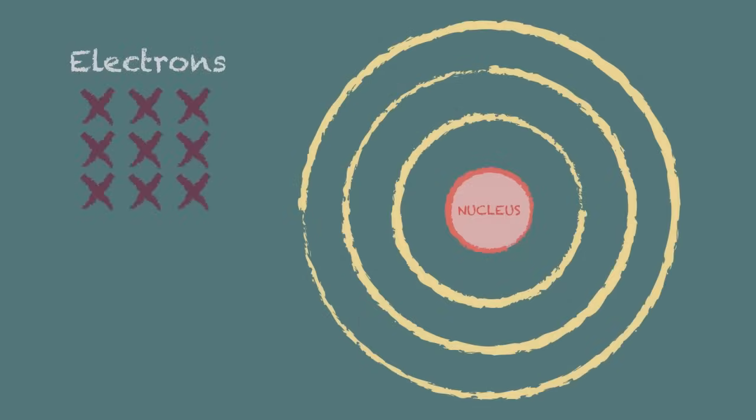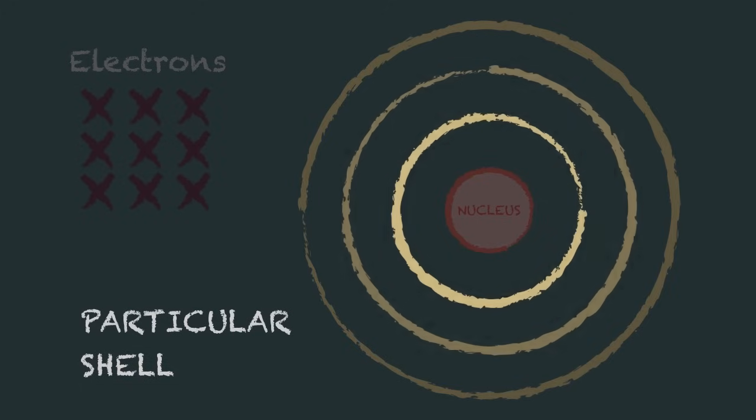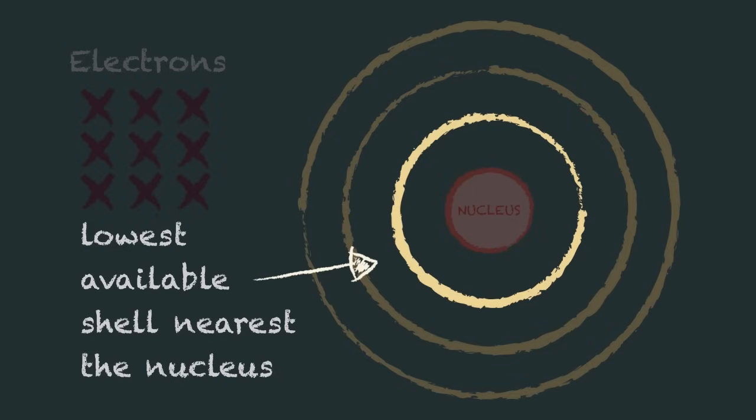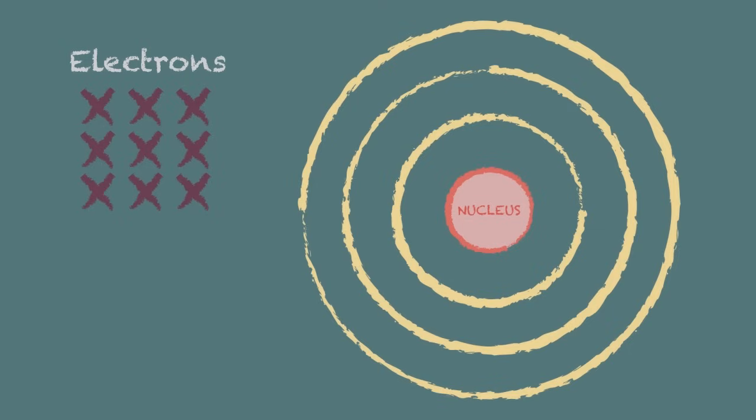Each electron in an atom is in a particular shell and the electrons must occupy the lowest available shell nearest the nucleus. So when we are drawing the electron configuration we have to fill up each shell in turn starting with the lowest.